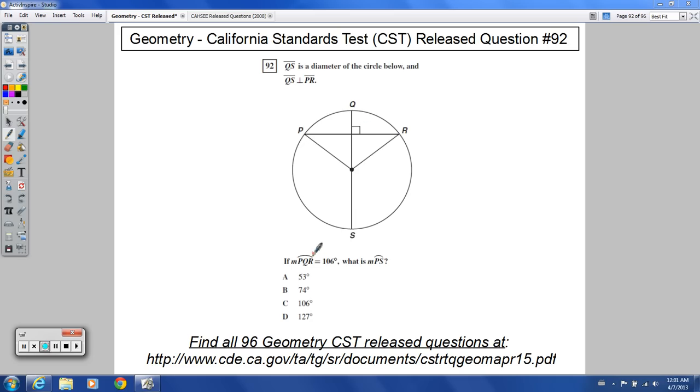The measure of arc PQR, from P to Q to R, is 106 degrees. What is the measure of arc PS?